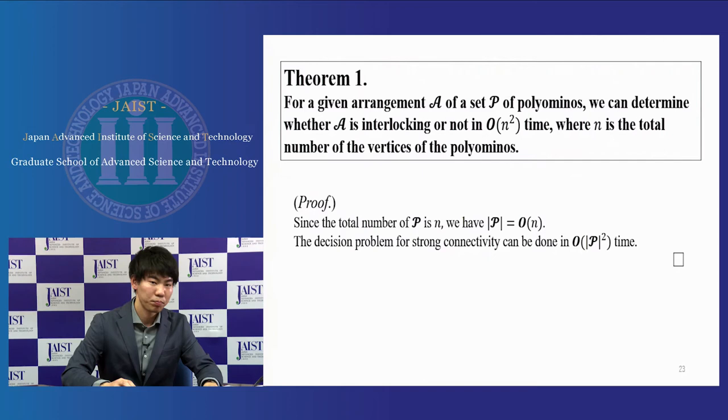Theorem 1. For a given arrangement A over set P of polyominoes, we can determine whether A is interlocking or not in order N square time, where N is the total number of vertices of polyominoes. Proof. Since the total number of P is N, we have the size of P is equal to order N. The decision problem for strongly connectivity can be done in order N square time.